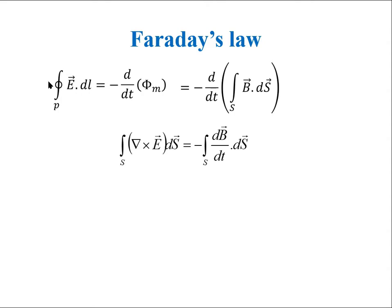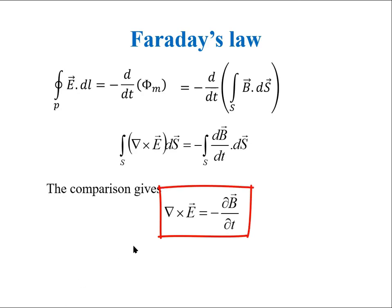And to do so, we use Stokes law to convert closed line integral of electric field into the surface integral of curl of electric field. And here, the order of differential with respect to time and integral with respect to the space coordinates can be reversed. Now the comparison gives del cross E equal to minus del B over del t or the curl of electric field is equal to time rate of magnetic field.